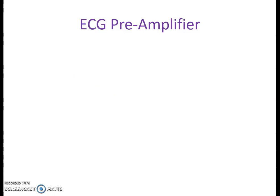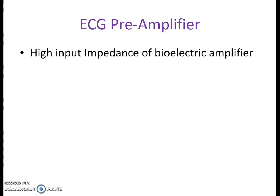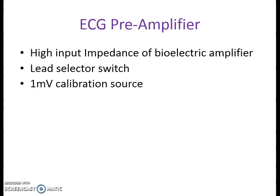One of the most important parts of the ECG machine is the ECG preamplifier. Whenever we are using a preamplifier, we have to look for certain important characteristics. The first and foremost is that it should be a bioelectric amplifier having high input impedance. This characteristic enables the preamplifier to deal with very small amplitude signals and ultimately eliminate the loading effect. The preamplifier should have a lead selector switch and a 1 millivolt calibration source, because the machine used for diagnosing patient abnormality must be calibrated. So before each reading, we generate a 1 millivolt calibration pulse from the machine itself.